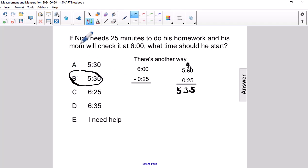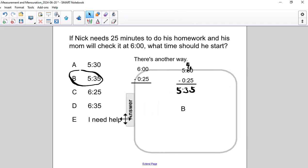So, there are two ways to solve this problem and get the answer of 5:35 using a clock or setting up an arithmetic problem. Either way, the correct answer is B.